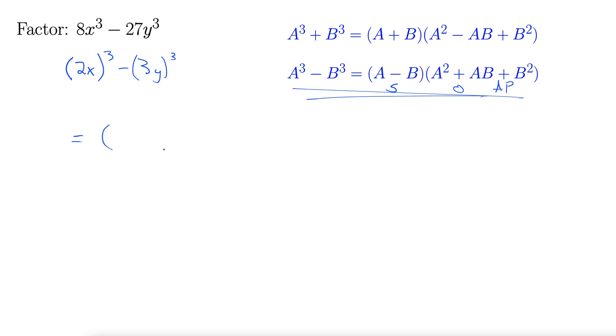Okay, so let's do it. All right, binomial, trinomial, 2x minus 3y. Square the 2x, 4x squared. Multiply them together, change the sign, 6xy—notice that I'm not multiplying by 2 there—plus, and then square the last term, 9y squared. There you go.